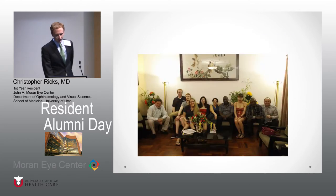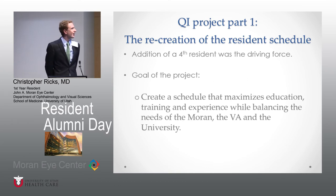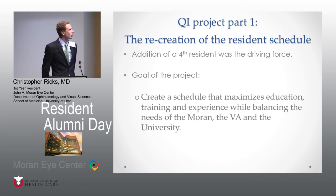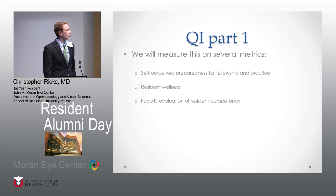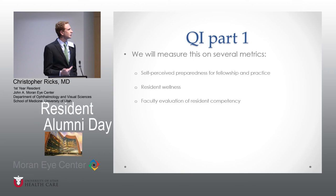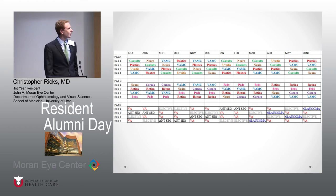Now let's briefly touch on my quality improvement project. I was tasked with and undertook the recreation of the residents' schedule this year. This was driven by the addition of a fourth resident. Our goal was to create a schedule that maximizes education, training, and experience while balancing all the needs of Moran, the VA, and the university. We want to measure this by self-perceived preparedness for fellowship and practice, resident wellness, and faculty evaluation of resident competency.